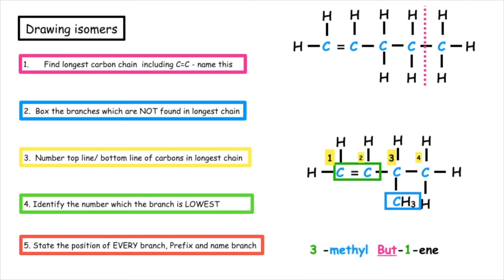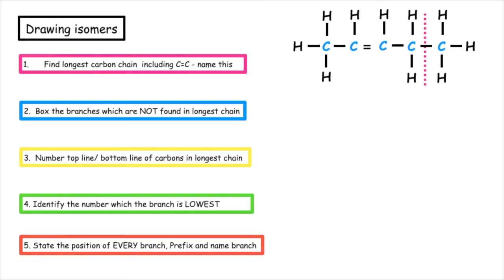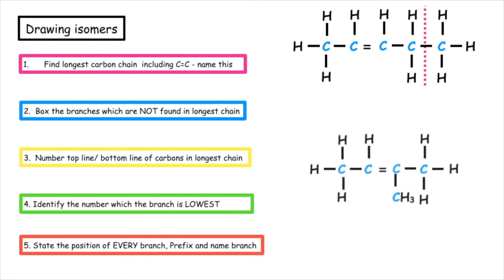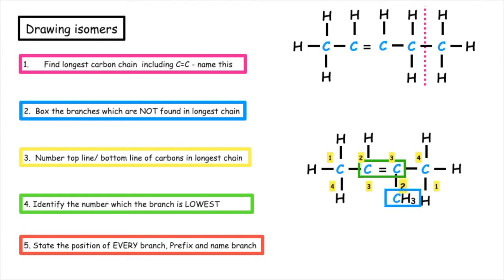There are no more middle carbons for us to move the branch along, so we now have to take our second straight-chained alkene to create a new isomer — we cut a carbon and add a branch. We can only add on to the middle carbons. The longest carbon chain would still be four. The lowest position that my carbon-to-carbon double bond could be on is position two, so the name of that straight chain alkene would be but-2-ene. However, the branch is also found on position two, so the full name would be 2-methyl-but-2-ene.